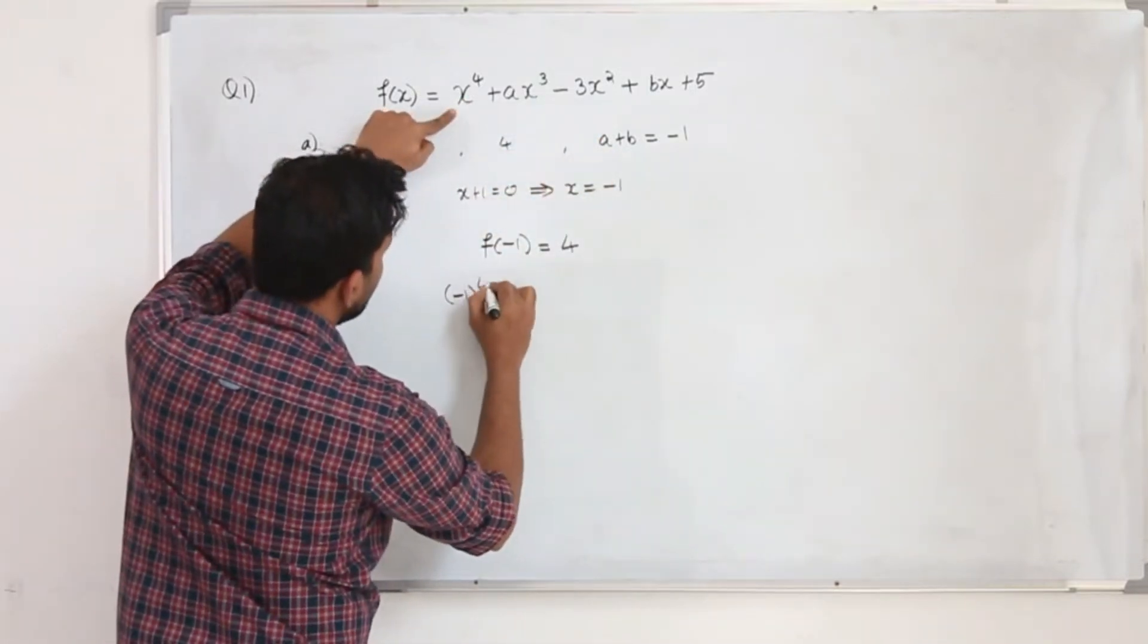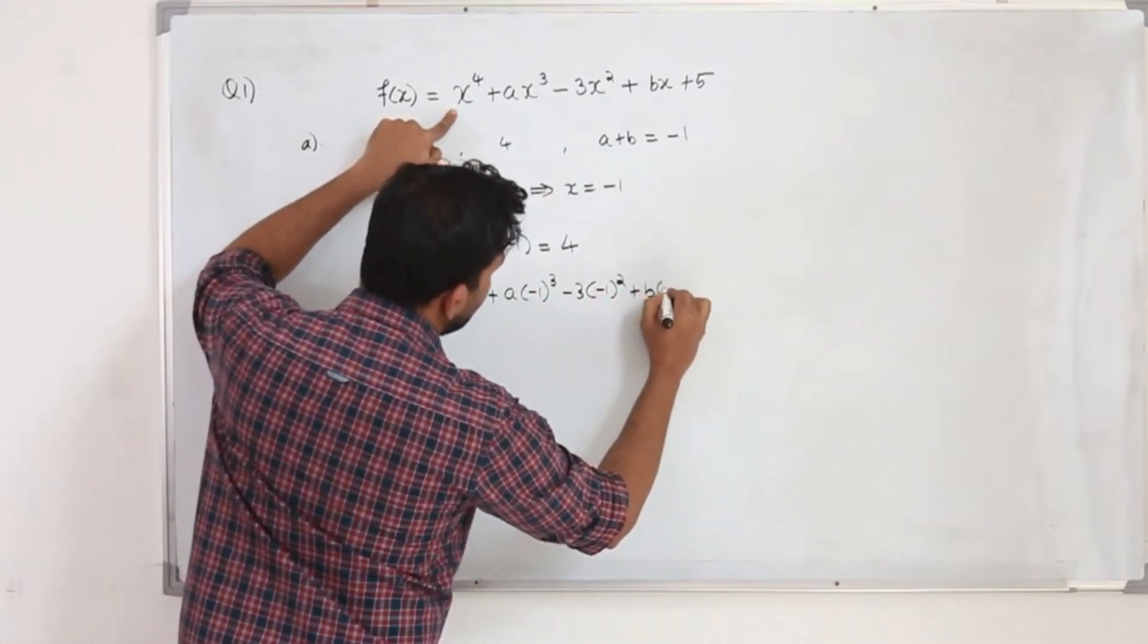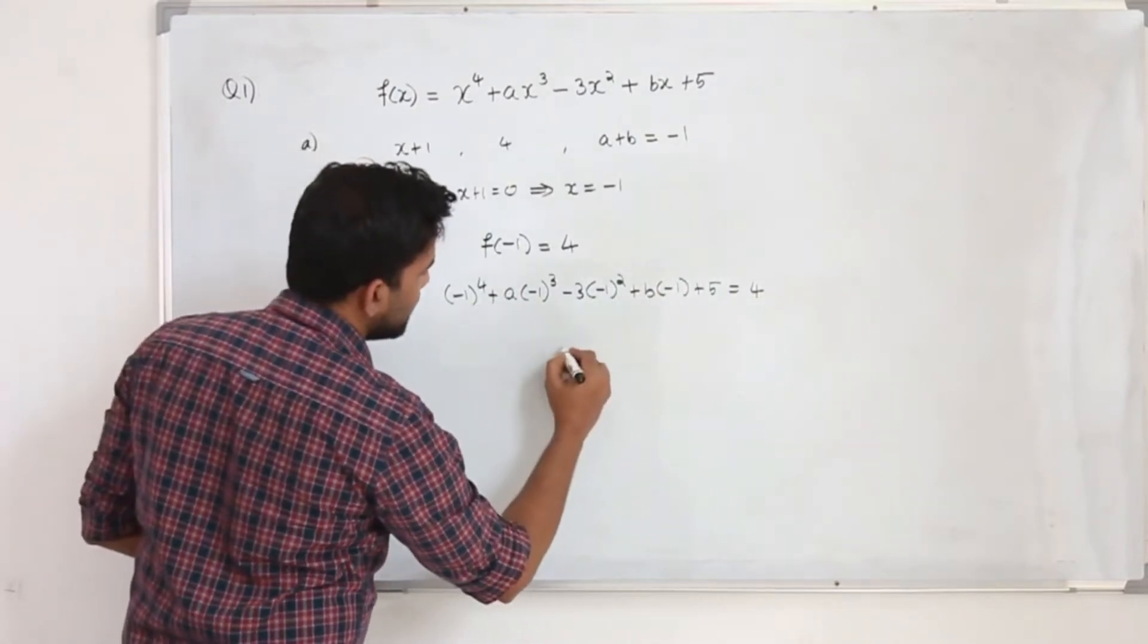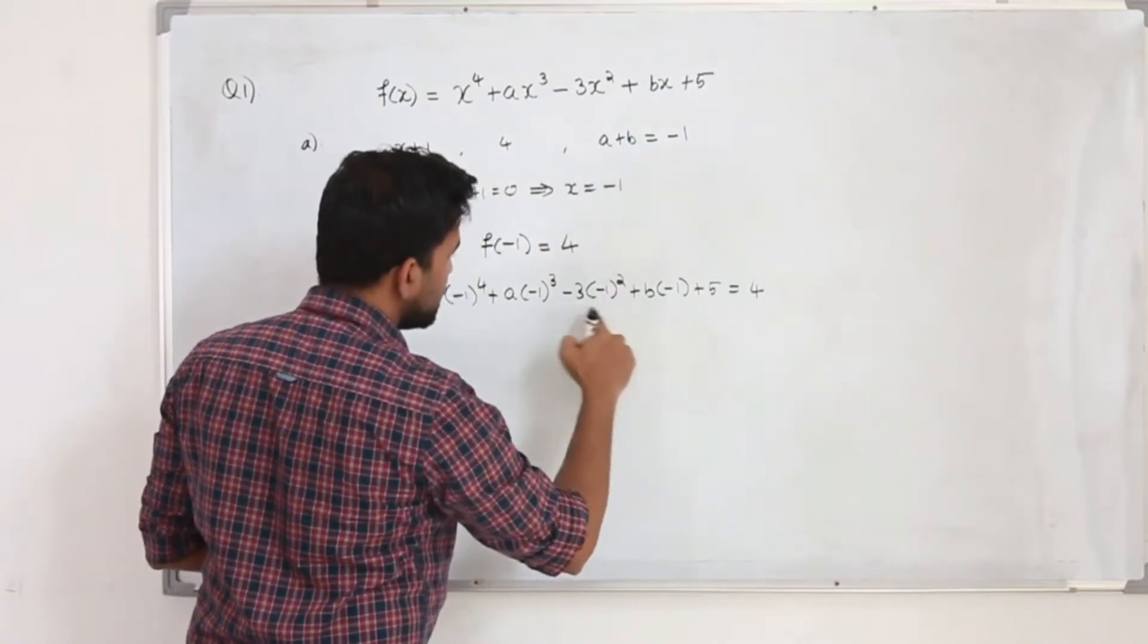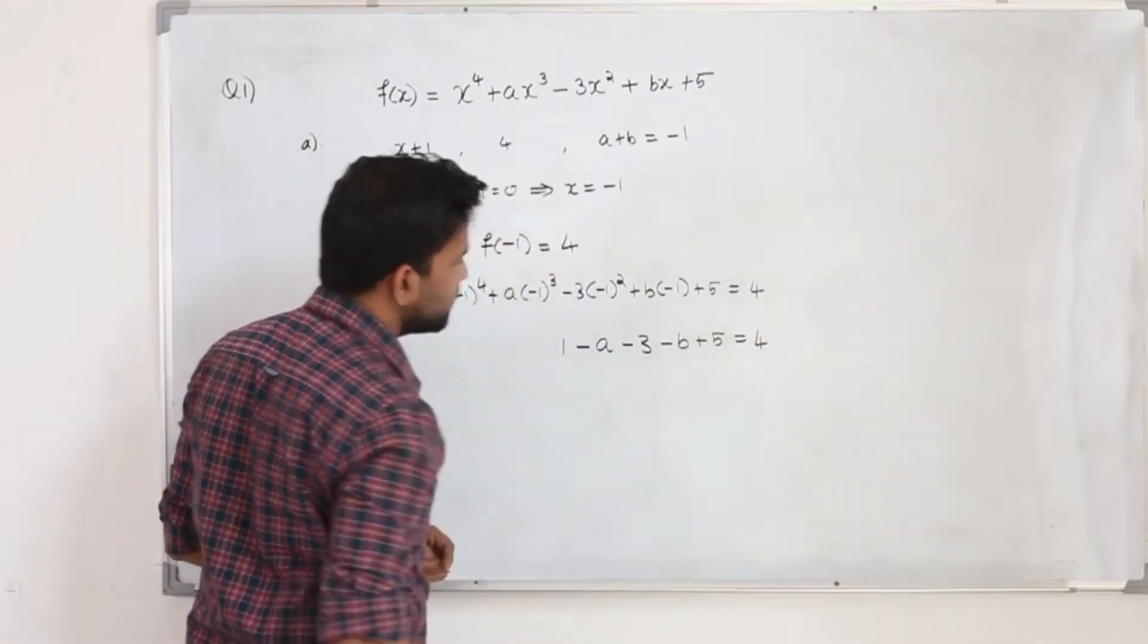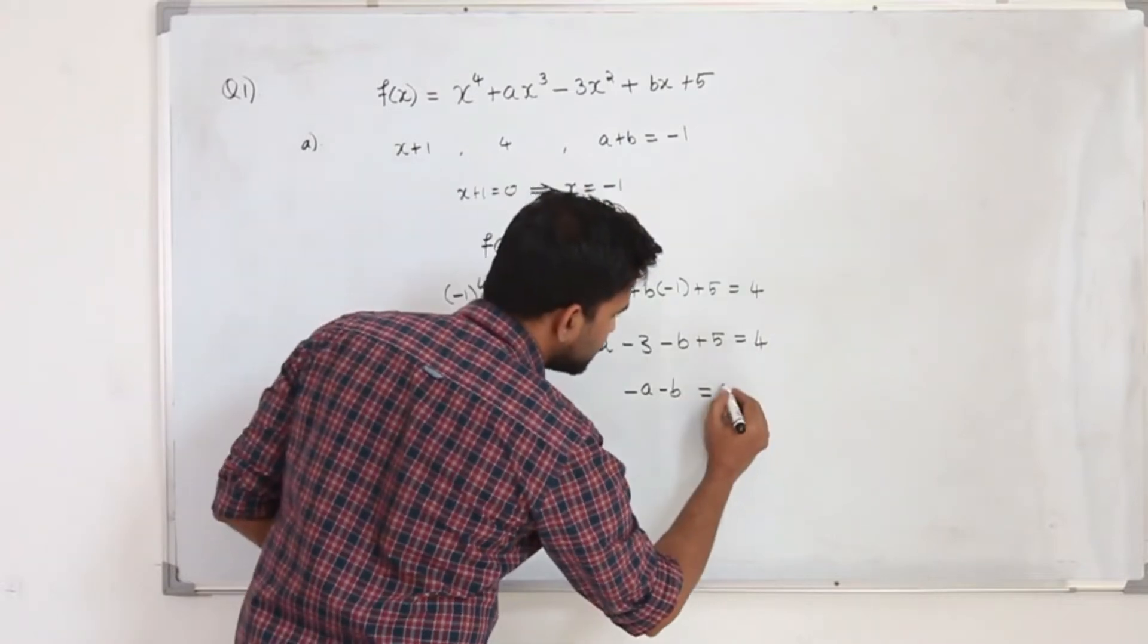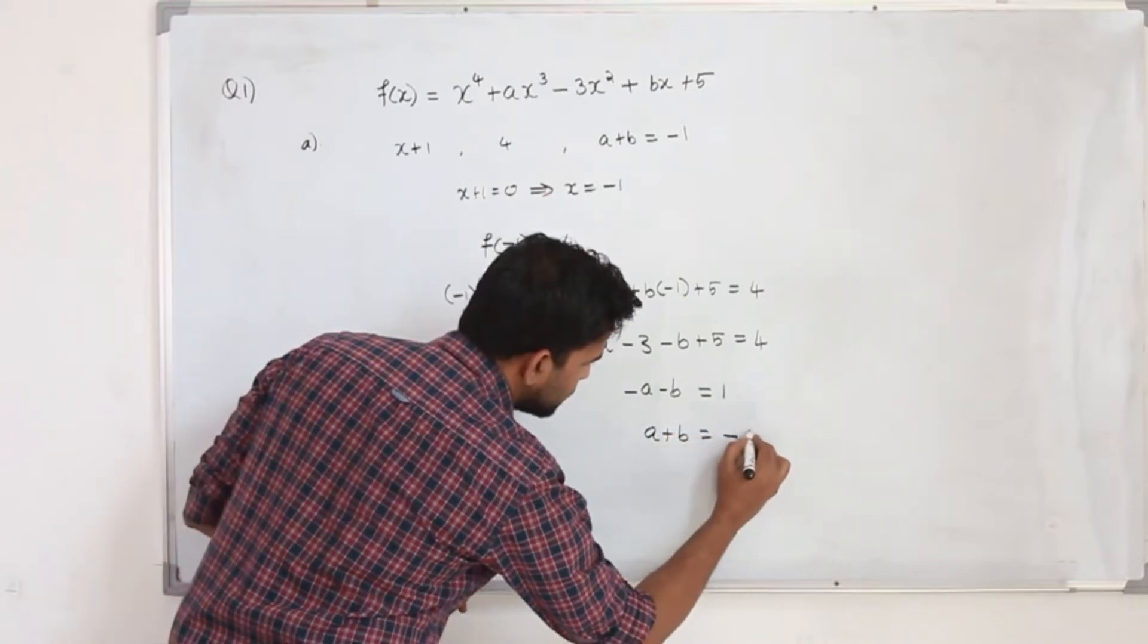So we are going to replace x by minus 1 in this function. So minus 1 to the power 4 plus a times minus 1 whole cube minus 3 times minus 1 whole square, b times minus 1 plus 5 is 4. So when you simplify this, you will get this equation. This is 1, you will get 1, minus 1 whole cube is minus 1. So minus a, minus 1 whole square is positive 1. So minus 3, minus b plus 5 equals 4. So you will get minus a minus b equals 6 minus 3 is 3. 3 goes to the other side. 4 minus 3 is 1. So multiply everything, the whole equation by minus, so you will get a plus b is equal to minus 1.